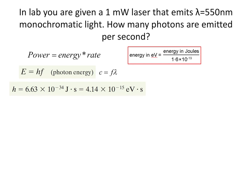Alright, so I have a couple of problems to work through. This first one is just about photons, not the photoelectric effect. Let's imagine you're given a 1 milliwatt laser. Milliwatts — watts are joules per second, so 1 milliwatt equals 0.001 joules per second. That's power. The laser emits light at lambda equals 550 nanometers, monochromatic light — all the same wavelength. How many photons are emitted per second?